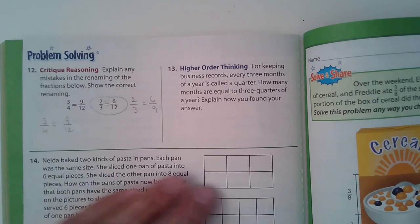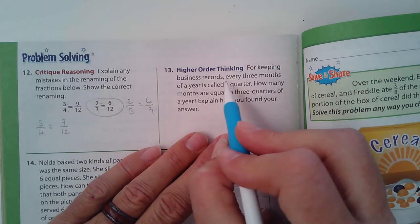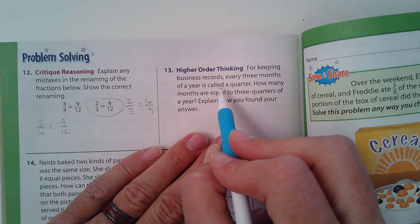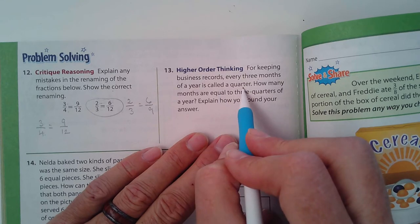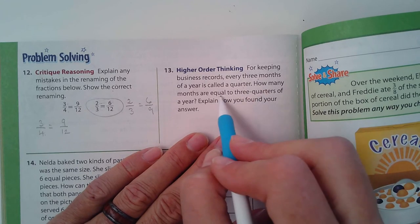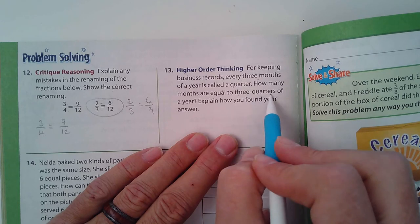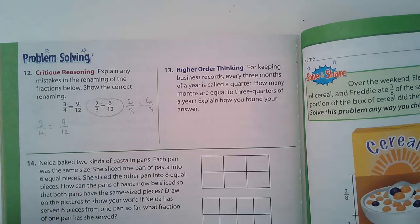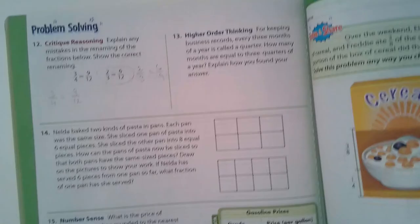Number thirteen, higher order thinking: for keeping records, business records every three months of a year is called a quarter because there's four quarters in a year. How many months are equal to three-quarters of a year? Yeah, I'll let you guys answer that one. Think about it.